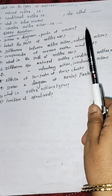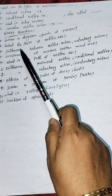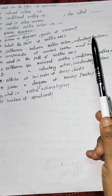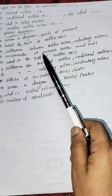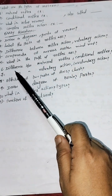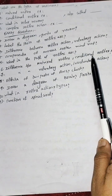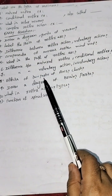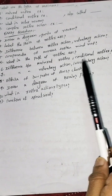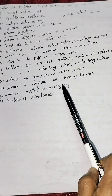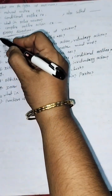The important essay questions include: draw a neat diagram of a neuron and label the parts; label the parts of the reflex arc; difference between reflex action and voluntary action; components of the nervous system mind map; what is the path of reflex arc; difference between natural reflex and conditional reflex; difference between voluntary action and involuntary action; effects of the two parts of the ANS and a chart; draw a diagram of the brain and its parts; what is reflex action and its types; and what are the functions of the spinal cord.